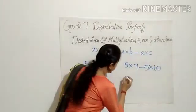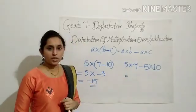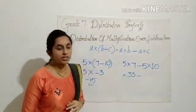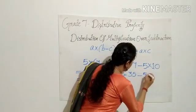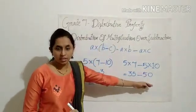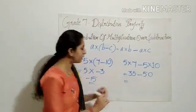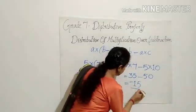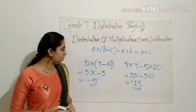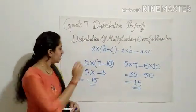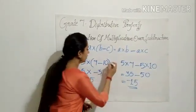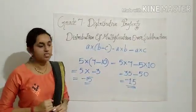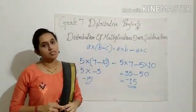Let us check the RHS also. 5 into 7 — what is 5 into 7? It is 35. Minus what is 5 into 10? It is 50. So 35 minus 50: 50 minus 35 is 15, and the bigger number sign is negative. So we got negative 15. Here also we got the same answer. 5 into 7 minus 10 is equal to 5 into 7 minus 5 into 10.